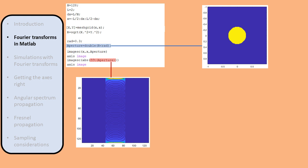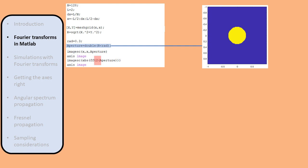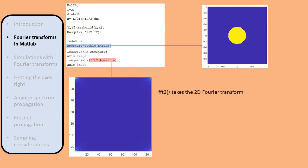The reason is that the FFT operation doesn't take the two-dimensional Fourier transform of the entire aperture; rather it takes the one-dimensional Fourier transform of each column separately. To take the two-dimensional Fourier transform, we use the FFT2 operation. But when we apply this operation, we still don't get the result we want — we do get an Airy disk, but it is quartered and spread out on the four corners.